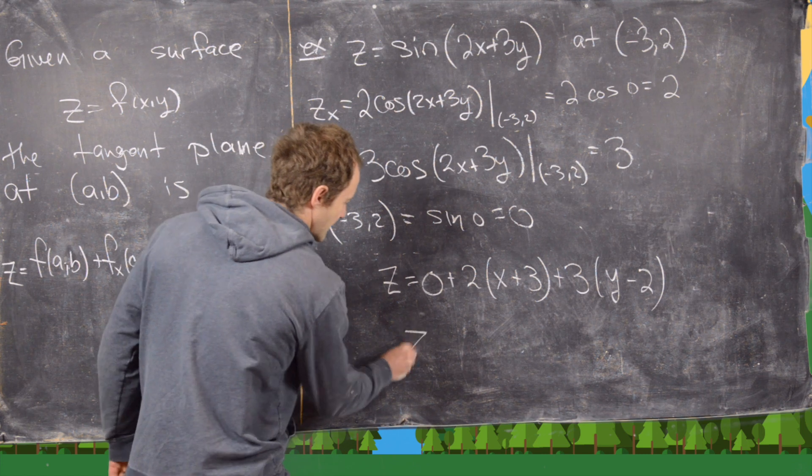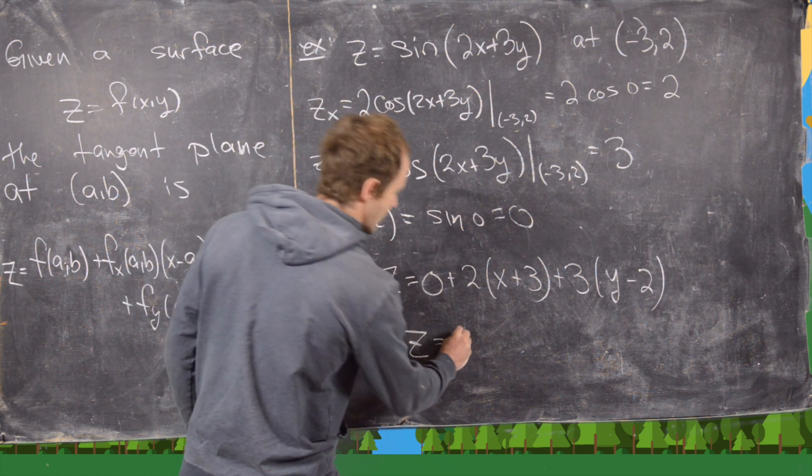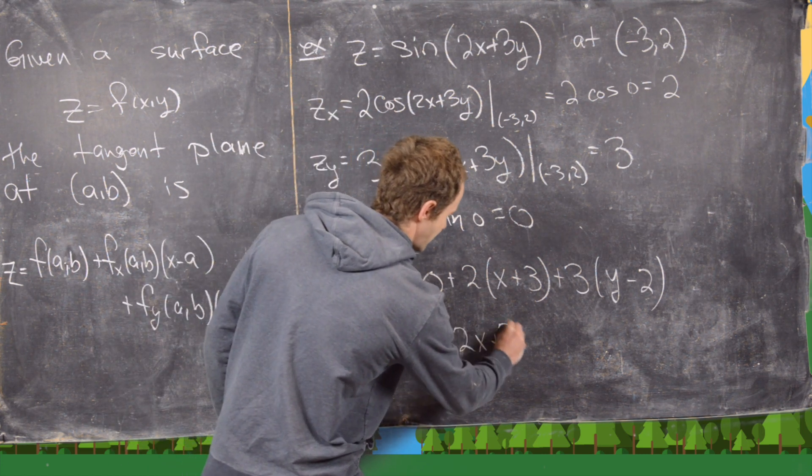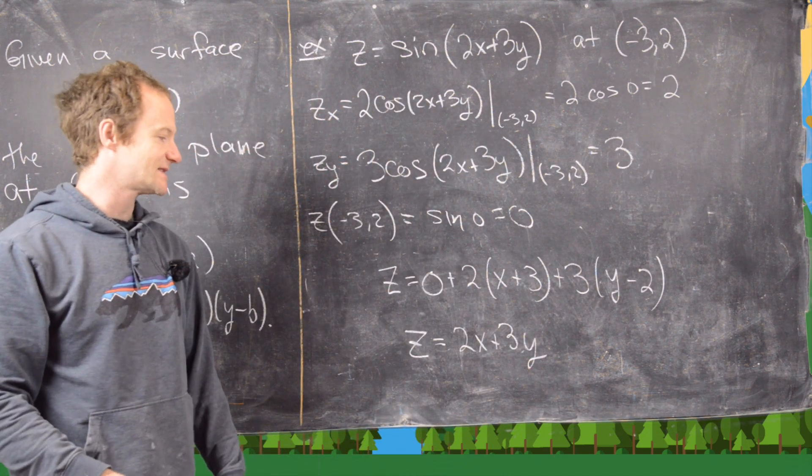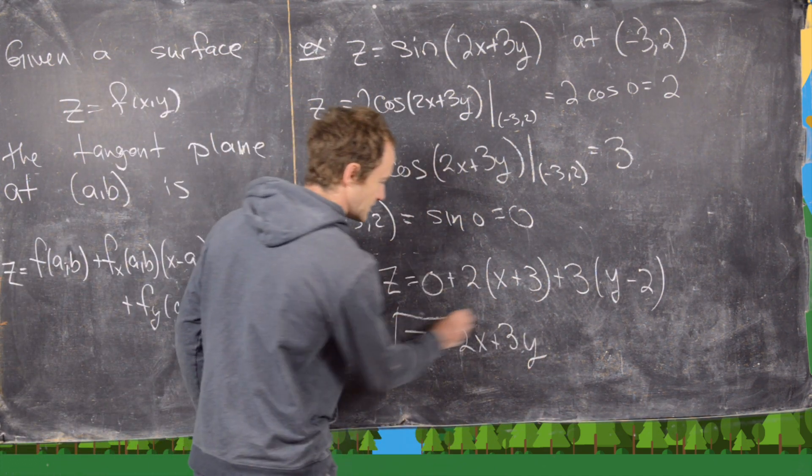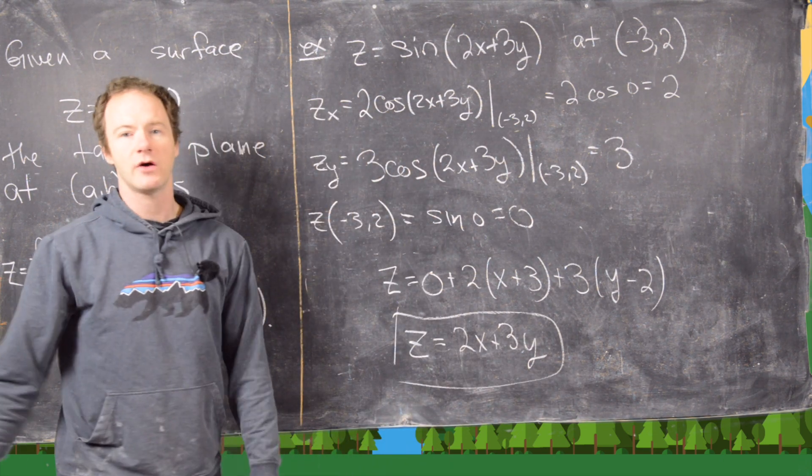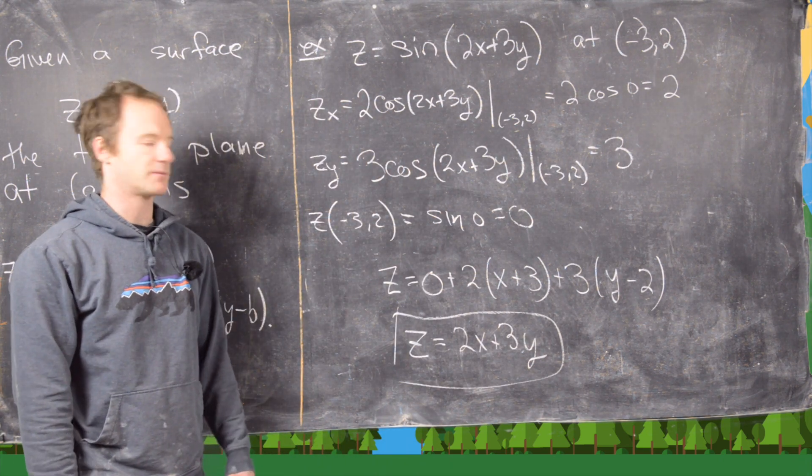Let's see if we can simplify that pretty quick. This is going to be 2x plus 3y, and then we have 6 minus 6. So we just get z equals 2x plus 3y here. I think this is a pretty good place to stop this video.